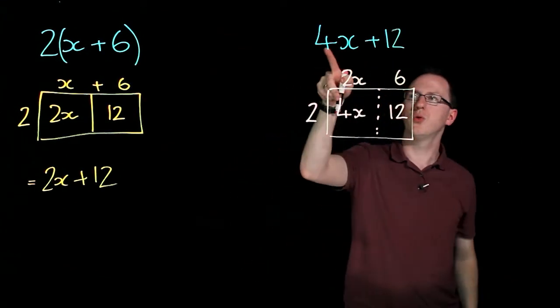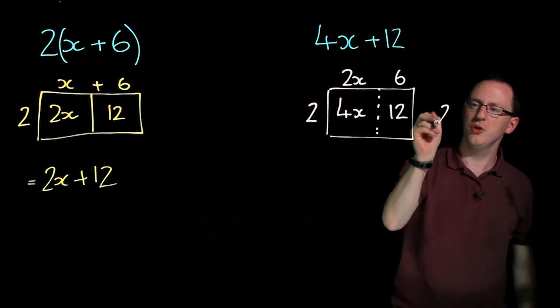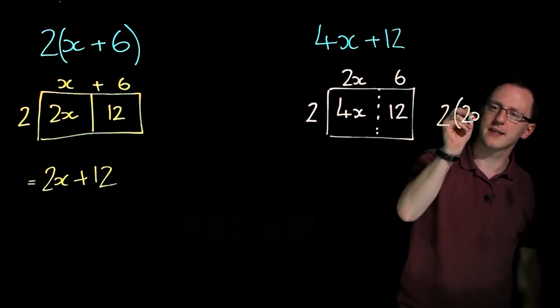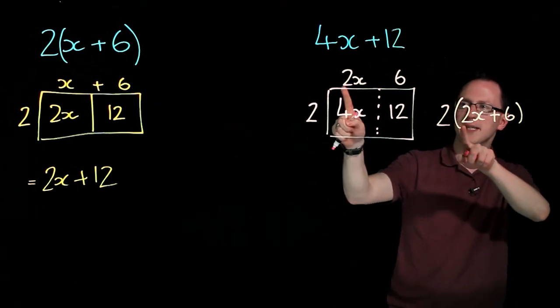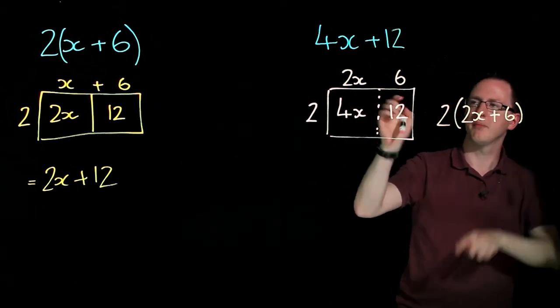So I can write 4x plus 12 as 2 brackets 2x plus 6. This length 2, this length 2x and 6 plus 6.